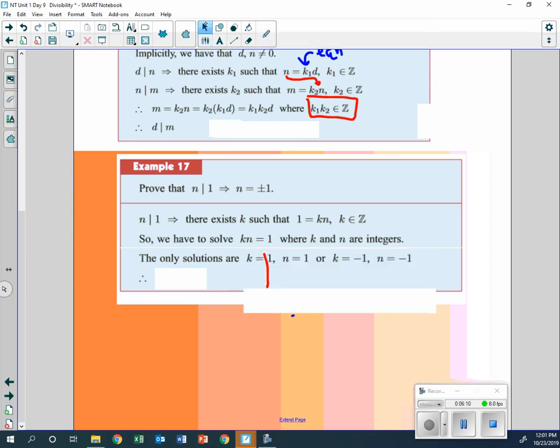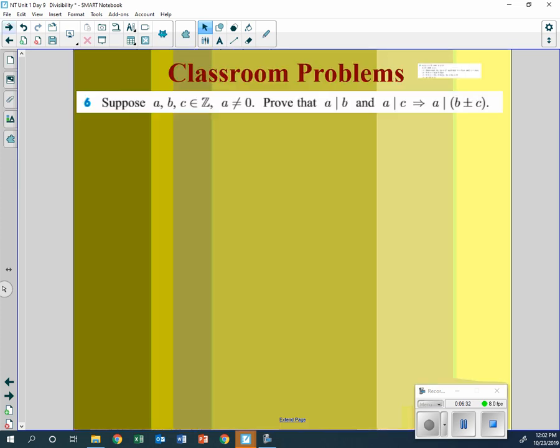The only possibilities is that you either have k equal to 1, or k equal to negative 1. And then, n would be 1 or negative 1. So since these are the only possibilities, then n is equal to plus or minus 1. How are we doing? Alright.